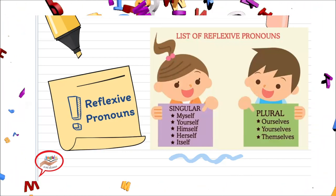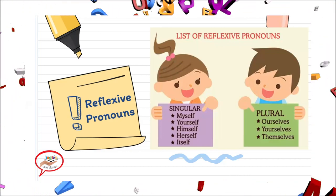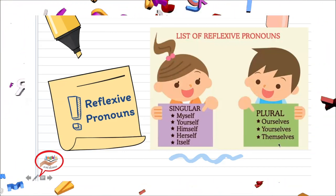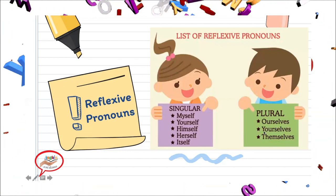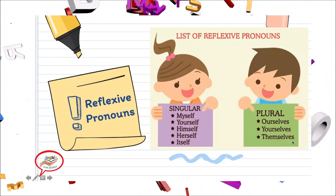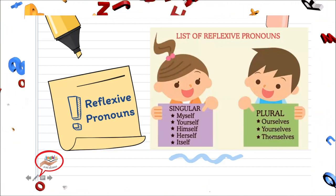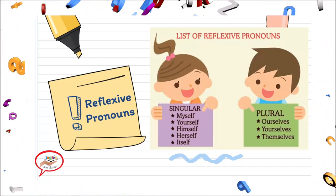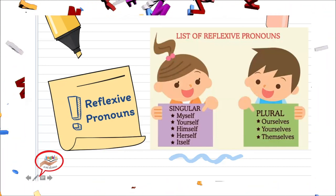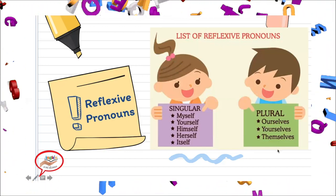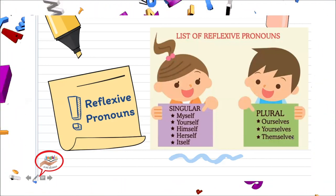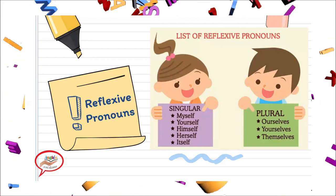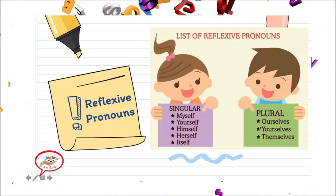Vamos a repetir: Ourselves. Yourselves. Themselves. Recordando: ourselves lo vamos a utilizar cuando nos referimos al pronombre we. Yourselves cuando nos referimos al pronombre you en plural. Y themselves cuando nos referimos al pronombre they, en el cual no nos incluimos. En el único que nosotros nos incluimos en el plural form va a ser en ourselves.